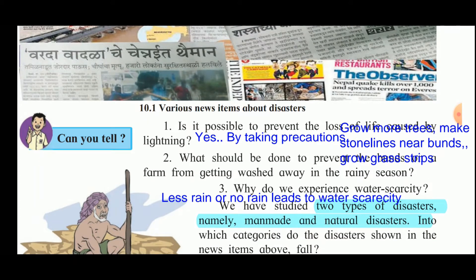The question is: is it possible to prevent the loss of life caused by lightning? In the rainy season, lightning is common and we hear or read in the newspaper that in many places there is loss of life or property due to lightning. It is possible to prevent this by taking the right provisions.